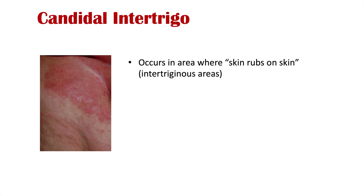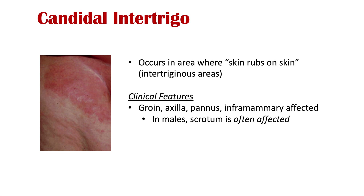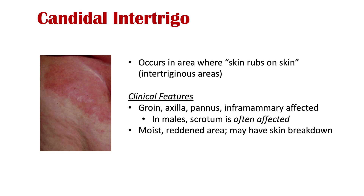Candida intertrigo is a skin infection occurring in areas where skin rubs on skin — the intertriginous areas. These include the groin, axilla (armpits), the pannus (skin fold of the abdomen), the inframammary area (under the breasts), and in males, the scrotum. It usually appears as a moist, reddened area with possible skin breakdown, and can feel like a burning sensation with pruritus (itching) and possible discharge.